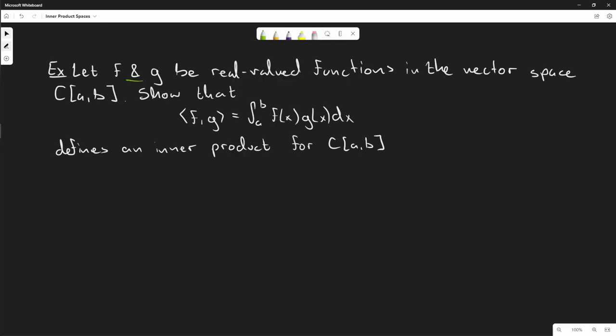Let's get started. In this example, we're going to let f and g be real-valued functions in the vector space C[a,b]. We have to show that the inner product of f and g equals the integral from a to b of f(x) times g(x) dx, and show that it defines an inner product.